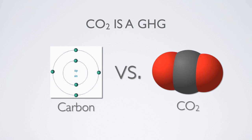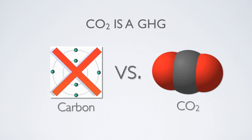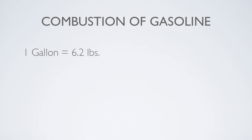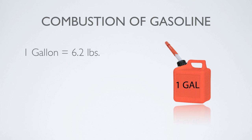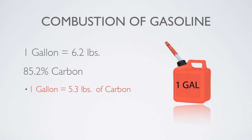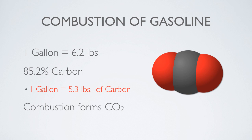Carbon versus carbon dioxide. Next, we're going to take a look at the difference between carbon and carbon dioxide. People often use the term carbon emissions to describe the release of carbon dioxide into the atmosphere. This can be somewhat misleading because it's carbon dioxide, and not carbon, that is a greenhouse gas. The following example explains the difference between carbon and carbon dioxide by examining the combustion of gasoline. One gallon of gasoline weighs approximately 6.2 pounds. We also know that gasoline contains 85.2% carbon by weight. This tells us that one gallon of gasoline contains about 5.3 pounds of carbon. But when gasoline is combusted, oxygen molecules combine with the carbon to form carbon dioxide.